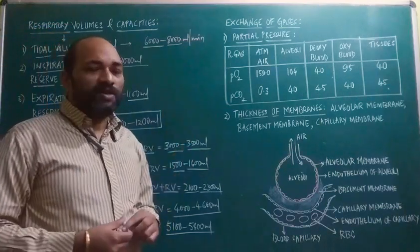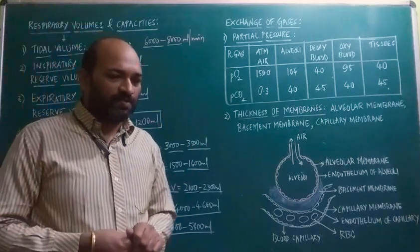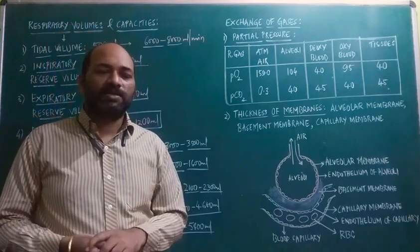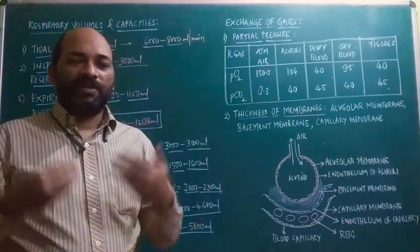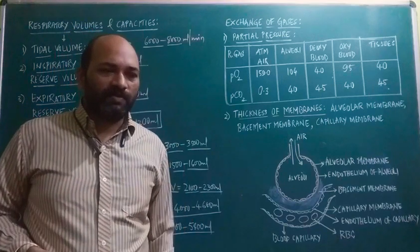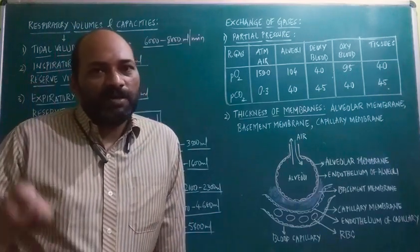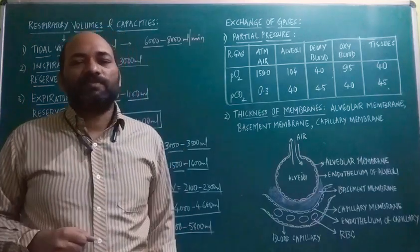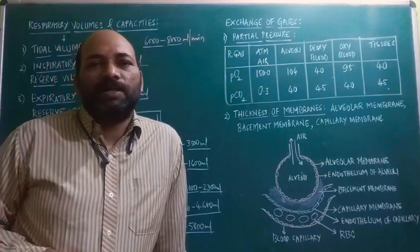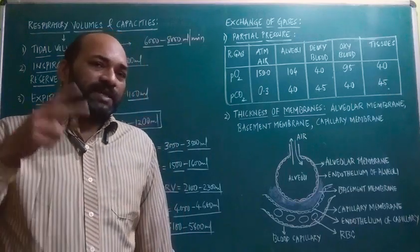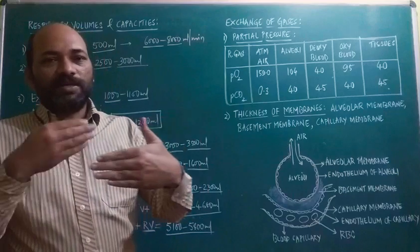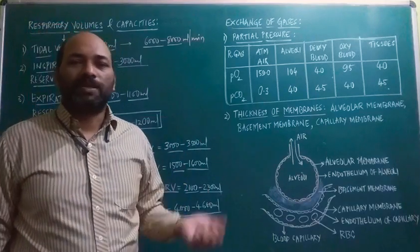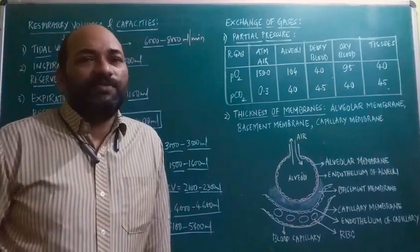Next is exchange of gases. In the human body, exchange of gases occurs at two sites. The primary site is the alveoli, where atmospheric air enters the lungs, oxygen passes from the alveoli into the blood, and carbon dioxide from deoxygenated blood enters the alveoli. The second site is the tissues, where oxygen from oxygenated blood diffuses into the tissues, and carbon dioxide from tissues diffuses into the blood.